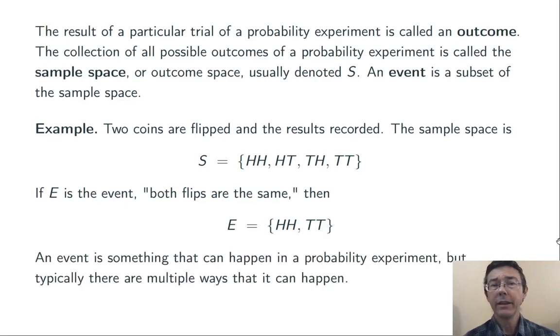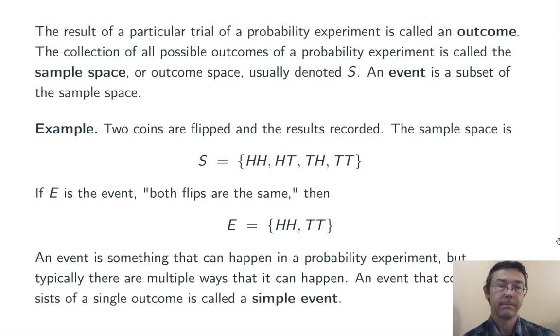Roughly speaking, an event is something that can happen when you run the probability experiment. But there may be multiple different ways that it can happen. As in this last example, the event both flips are the same can happen two different ways. If you have an event that can only happen one way, in other words, the event consists of a single outcome, we call that a simple event.